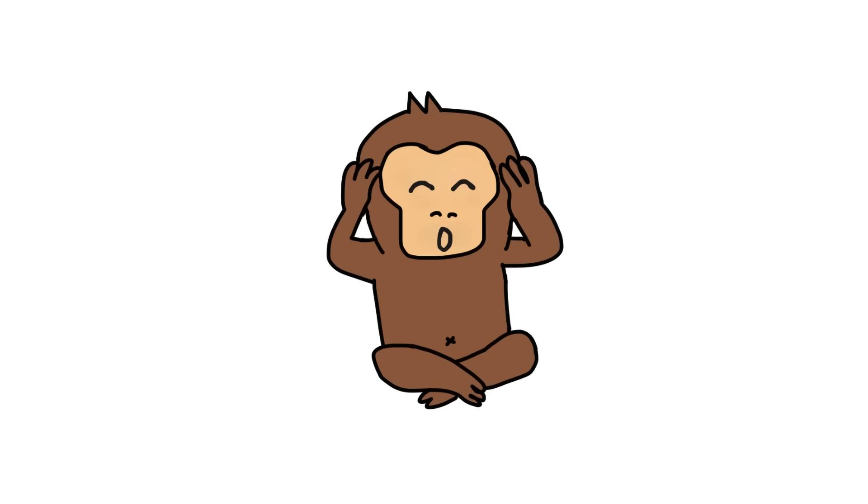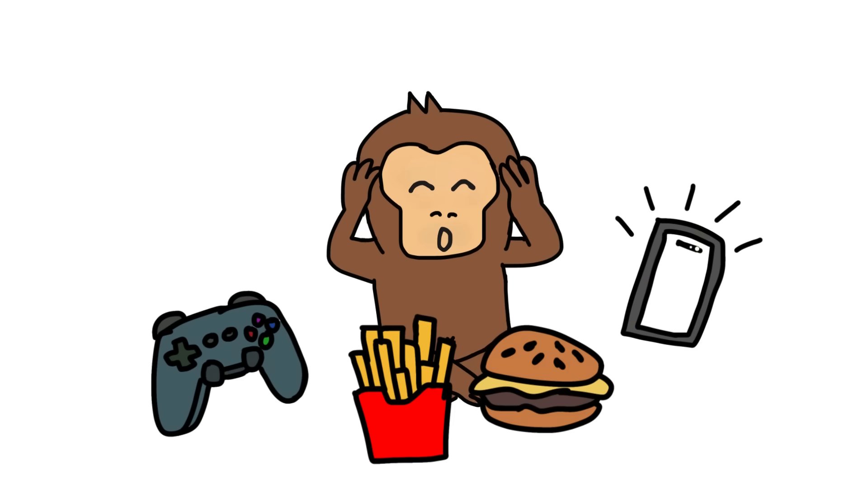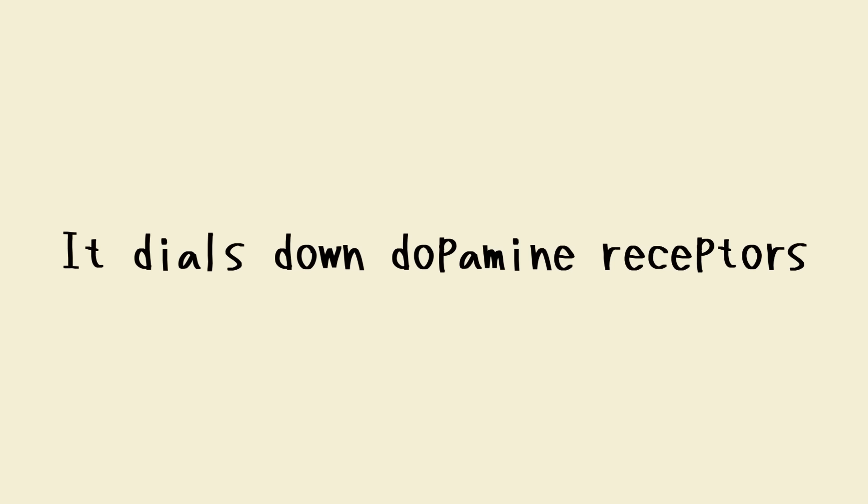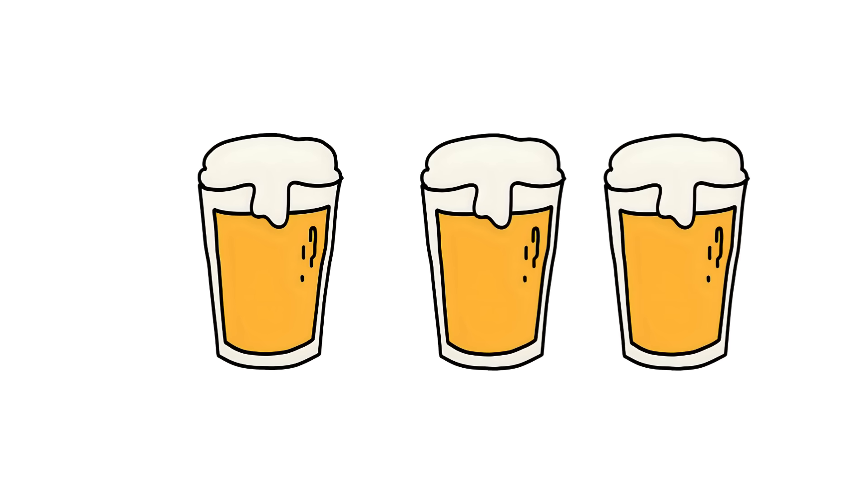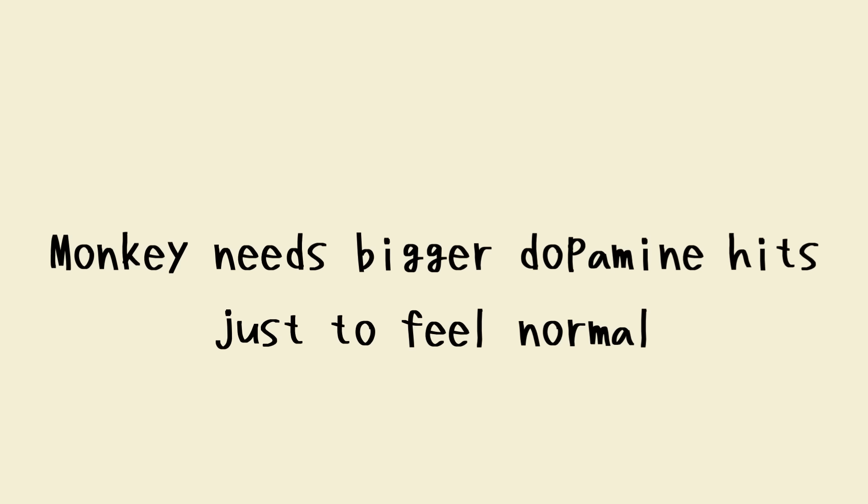Same with dopamine. When Monkey floods his brain with video games, junk food, endless scrolling, the brain adapts. It dials down dopamine receptors. Just like a drinker who needs more alcohol to feel tipsy, Monkey needs bigger dopamine hits just to feel normal.